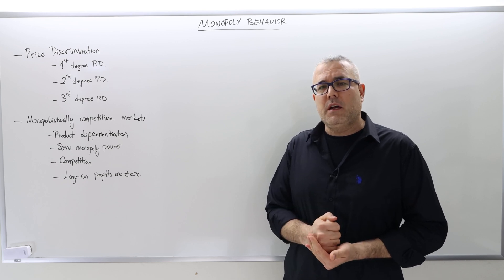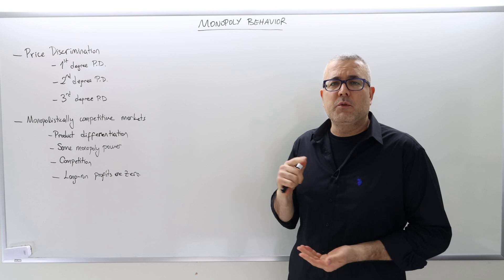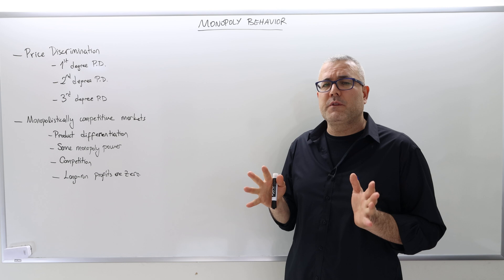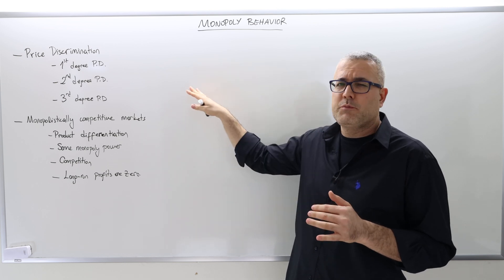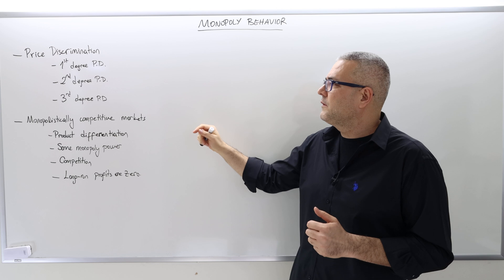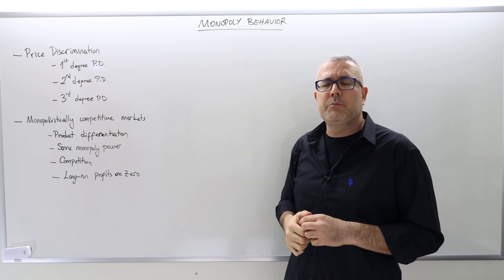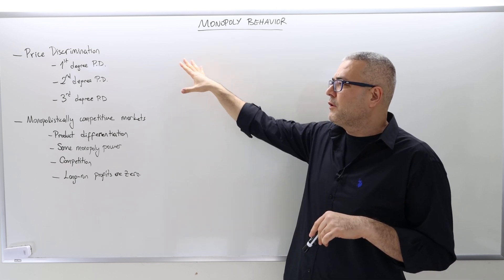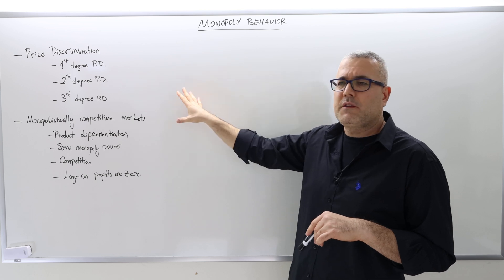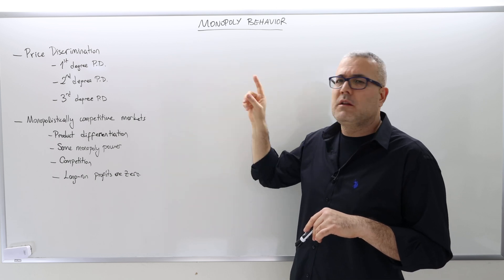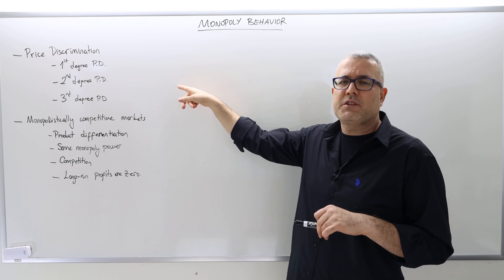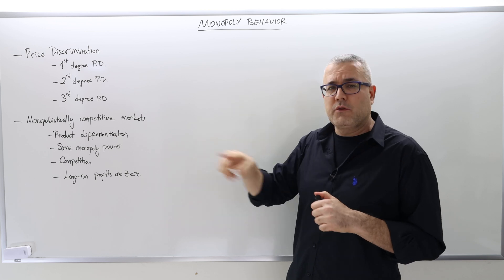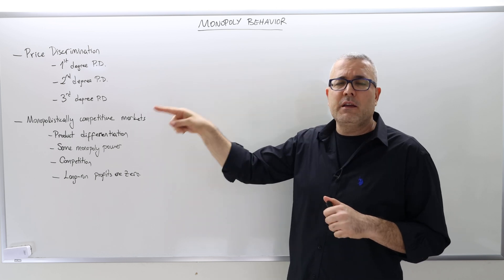In this video, I'm going to start our second chapter: Monopoly Behavior. There are two important topics that we need to talk about — the first one is more important than the other, to be honest. Price discrimination and monopolistically competitive markets. I'm going to briefly describe each topic and then dive deeper into price discrimination through examples in my next videos.